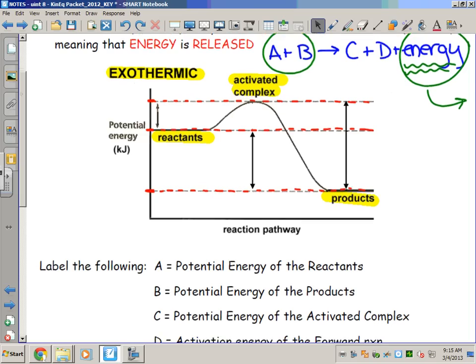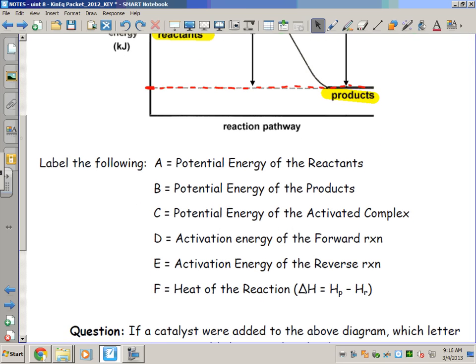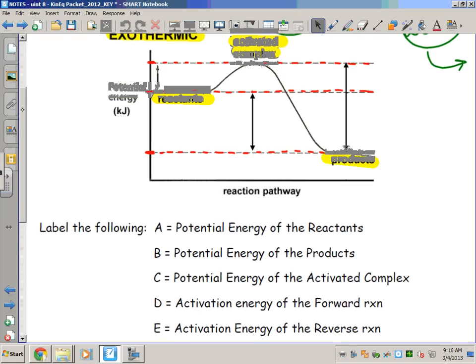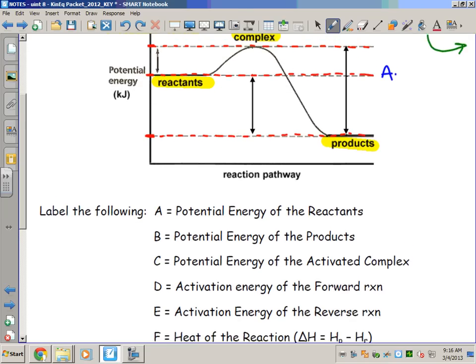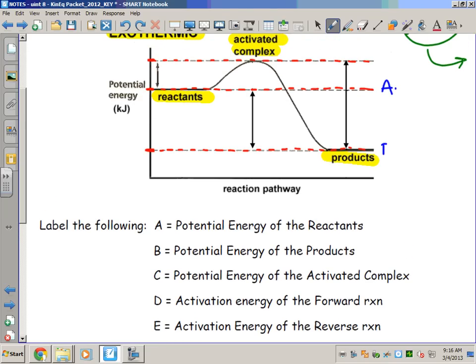So I've already covered the parts of this. Let's go ahead and do our labeling. A is the potential energy of the reactants. Well, we already located that dotted line and mentioned it. There's A. B: potential energy of the products. C: potential energy of the activated complex. Again, these things are not going to be labeled for you normally, but it's important that you know you're labeling that dotted line, that level on the y-axis that indicates the potential energy of each of those three points on this reaction pathway.